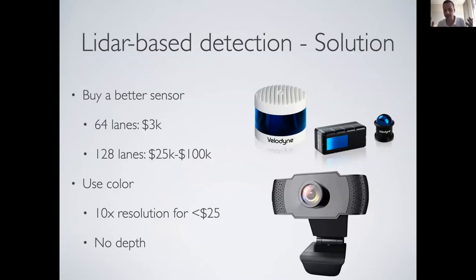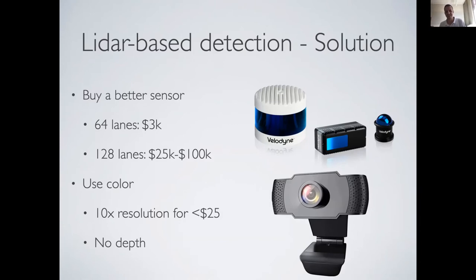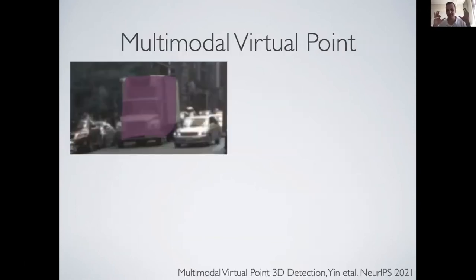One way to get around this is just buying a better sensor. nuScenes used a fairly low resolution 32-beam sensor — 32 scans horizontally. You could go to 64, maybe around $3,000, which might be acceptable for an autonomous vehicle. But if you want to go to 128-beam resolution, you're approaching the cost of the entire vehicle just for that sensor. By comparison, you can go on Amazon and buy a color camera that gives you 10x more resolution for about $25 — though obviously you don't get depth from it.